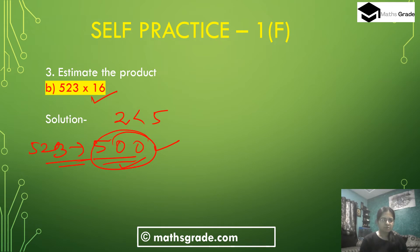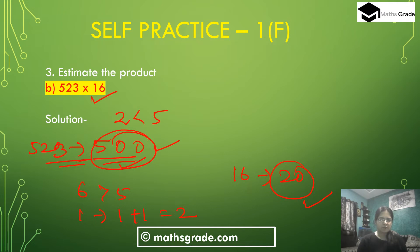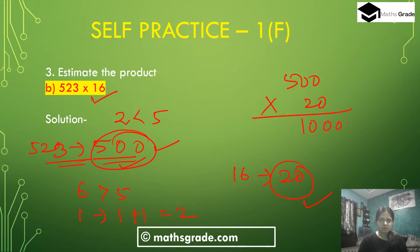Now for 16, rounded to the nearest 10: the unit place digit 6 is greater than 5, so add 1 to the tens place digit. 1 plus 1 is 2. Now 16 rounded to the nearest 10 will be 20. Multiply 523 rounded to nearest 100, which is 500, by 16 rounded to nearest 10, which is 20. So 500 multiplied by 20 is 10,000. So estimating the product, 523 multiplied by 16 is 10,000.